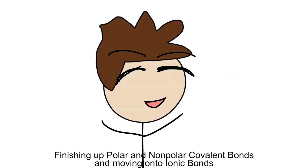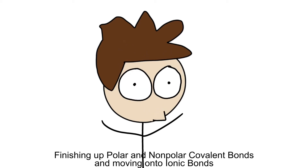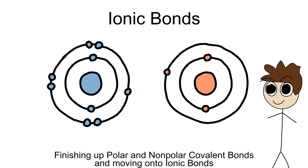That's all you need to know about covalent bonding for now. Let's move on to another type of bonding called ionic bonding. Ionic bonds have a very similar concept to covalent bonds, but instead of sharing electrons, ionic bonding actually completely takes away an electron from the other.